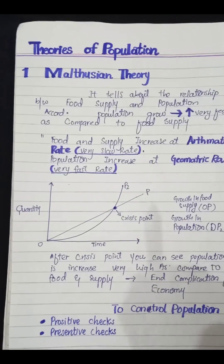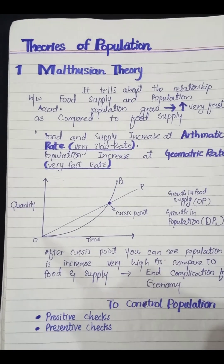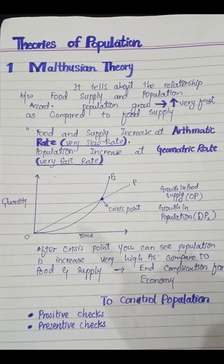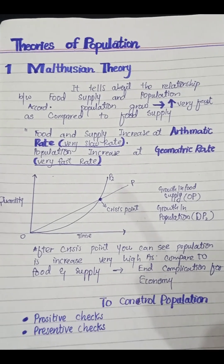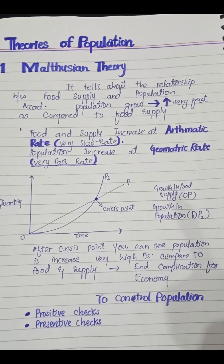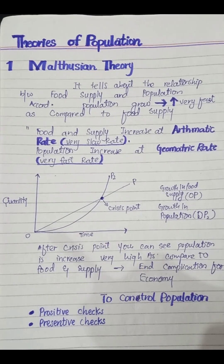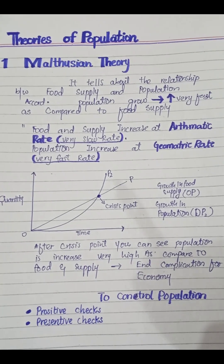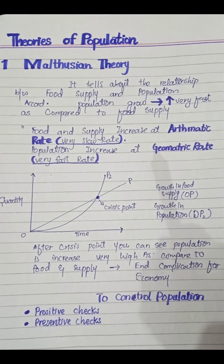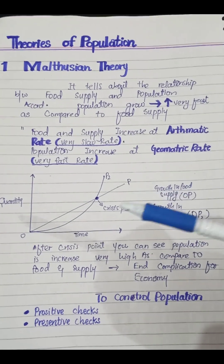In this diagram, we have taken time on the X axis and quantity on the Y axis. We have a straight line OP representing food supply, which grows slowly — arithmetic rate — going up gradually. The other line OP2 represents population growth, which is increasingly going up at a geometric rate.